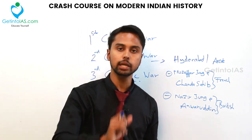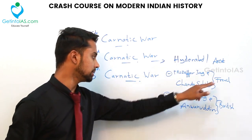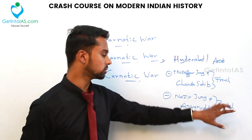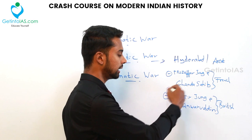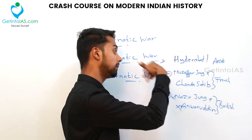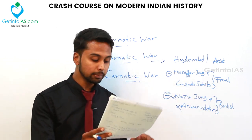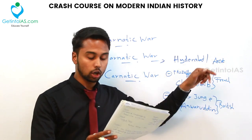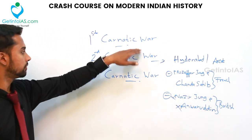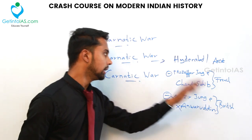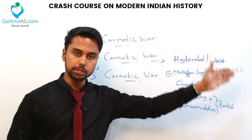The French supported Muzaffar Jung (Hyderabad) and Chanda Sahib (Arcot), while the British supported Nasir Jung and Anwaruddin. Nasir Jung and Anwaruddin were killed, and Muzaffar Jung and Chanda Sahib were placed on the throne — initially French were victorious. But finally, Robert Clive captured Arcot in 1751, defeating the French. The Second Carnatic War ended with the Treaty of Pondicherry.